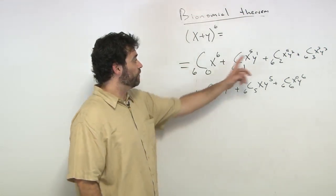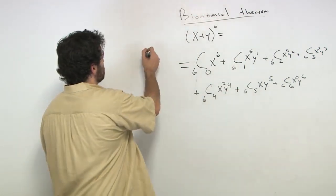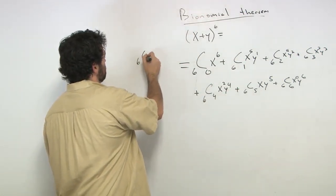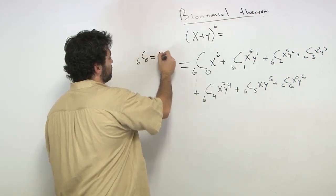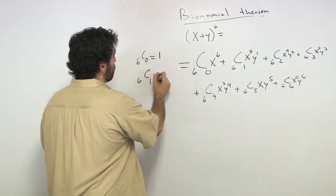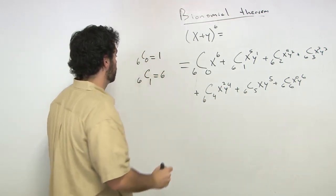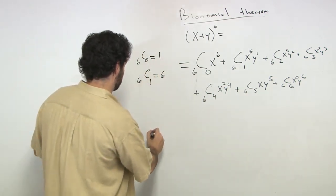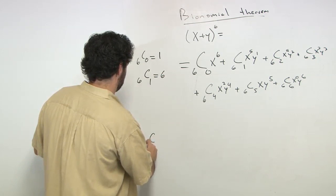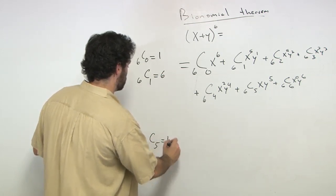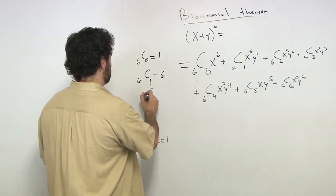Alright, so let's take a look, and we want to find the coefficients now. And remember what we said, that 6c0 is equal to 1. So let's find out what's 6c1, remember that's equal to 6. That's also the same thing as 6c5, which is also equal to 6.